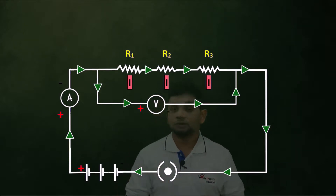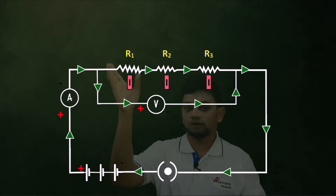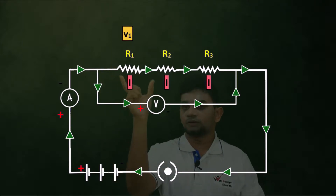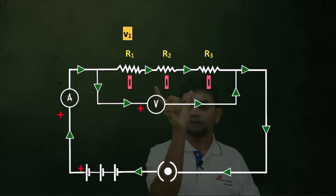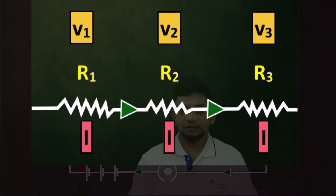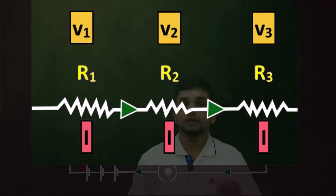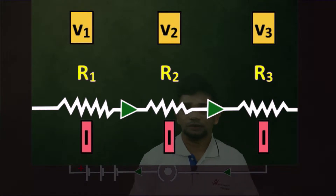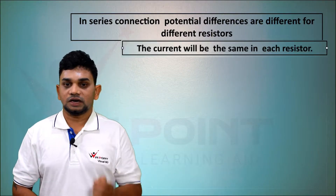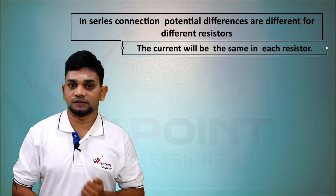What about potential difference? The potential difference will be different for different resistors. The potential difference across R1 is V1, across R2 is V2, and across R3 is V3. In series connection, the potential difference is different for different resistors, but the current is the same in all resistors. This is a very important point.